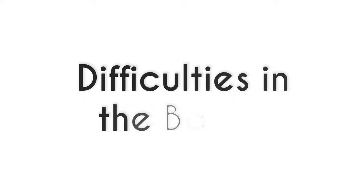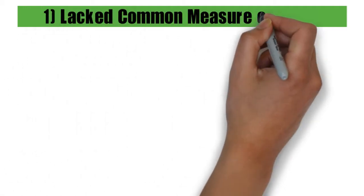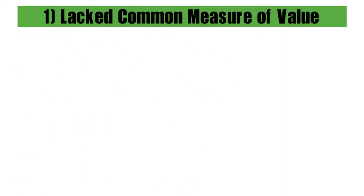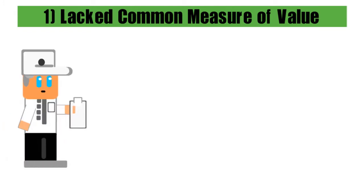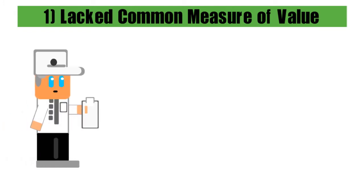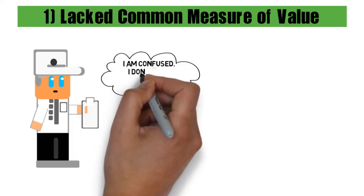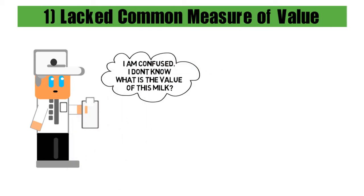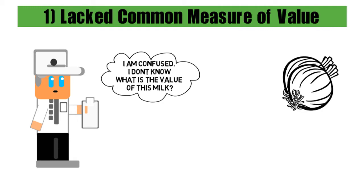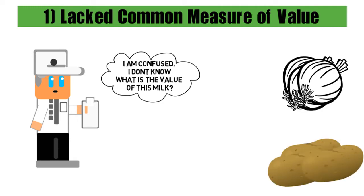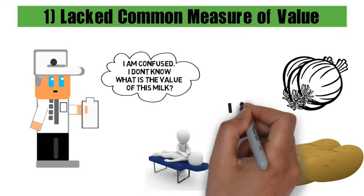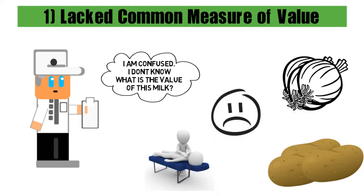The biggest problem with the barter system was that it lacked a common measure of value. It means it was difficult to compare two commodities. Say, for example, you have 2 liters of milk to sell. In such a case, you won't be able to make out if those 2 liters of milk are equal to 2 kgs of onion, or 5 kgs of potato, or worth a massage service. Because of such things, it was difficult to calculate the value of the goods exchanged.